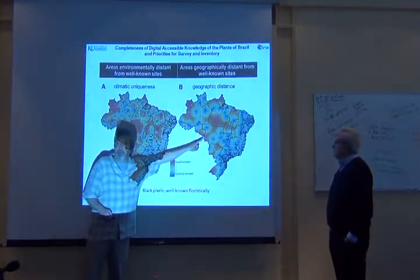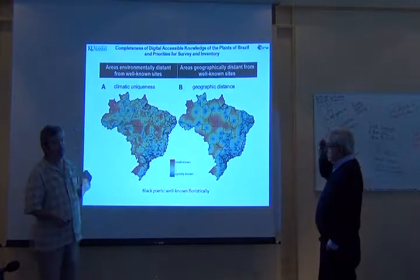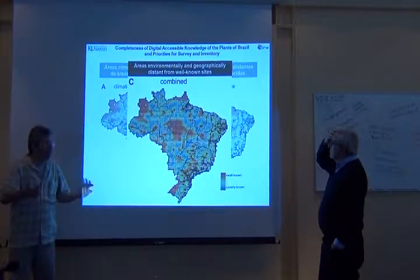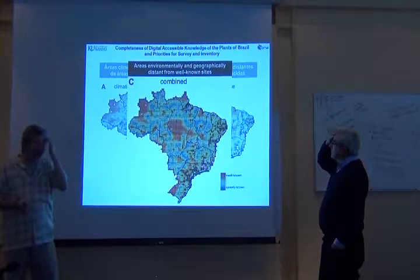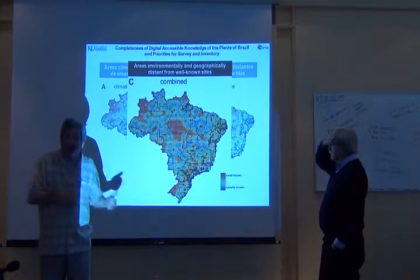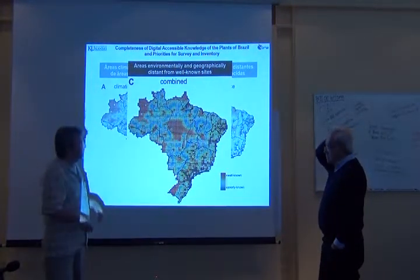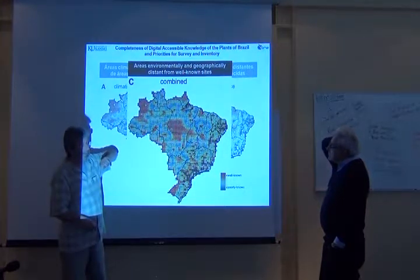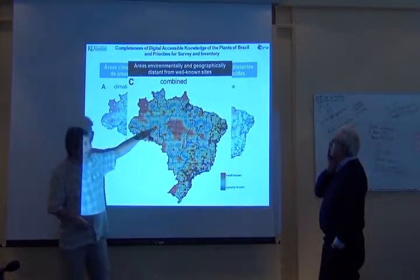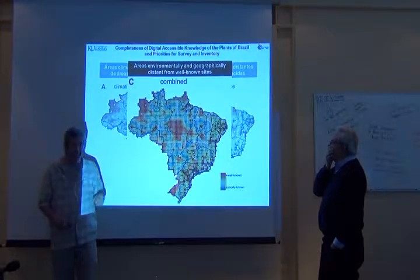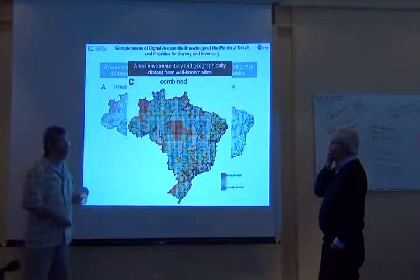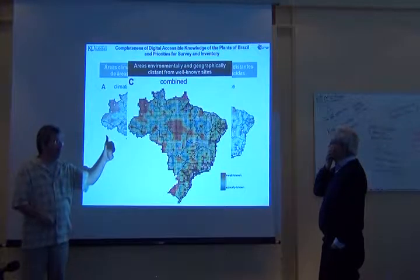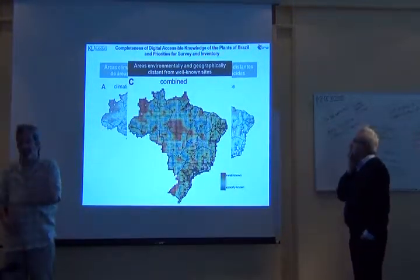Essentially what we have here is a view of sampling gaps in geographic space and sampling gaps in environmental space, and then we can put them together. We didn't really know how to weight them — I couldn't tell you geographic space is twice as important as environmental space — so we just weighted them equally. And this is what you get. You can still see those borderland gaps, but there's the real priority: it's in the middle of Brazil, as far from a border as you can get, and nobody has sampled well a site close geographically or similar climatically.